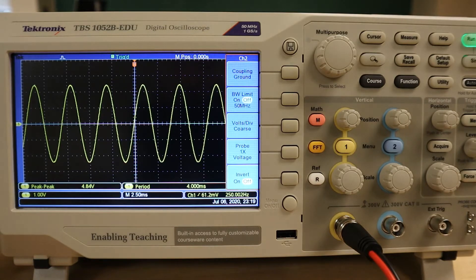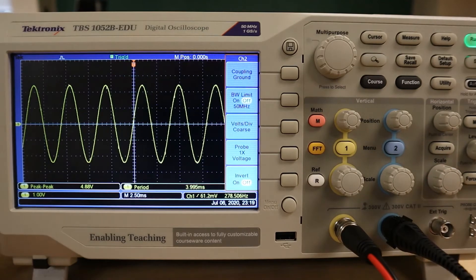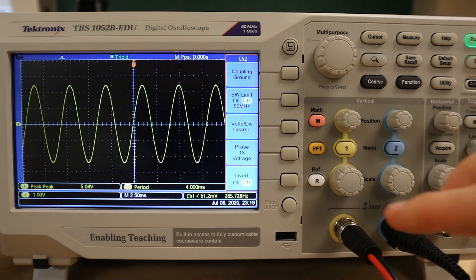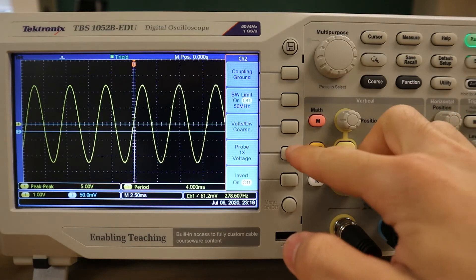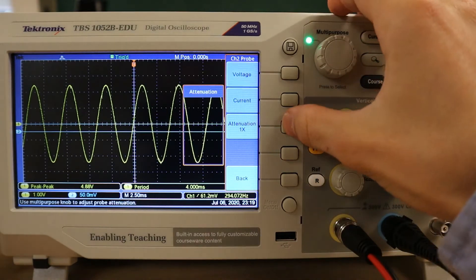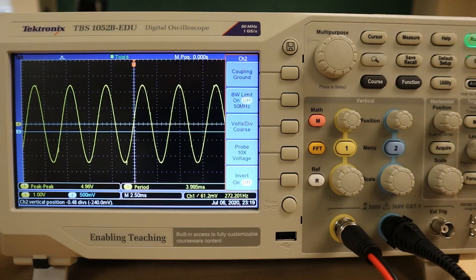In this next procedure, we'll explore using multiple channels on our oscilloscope. First, we want to turn on the trace for the second channel by pressing the menu button and then connect an attenuator probe to this channel, making sure that the attenuation factor of the probe is matched by the oscilloscope.